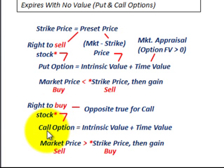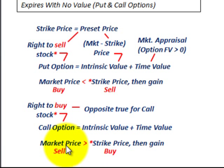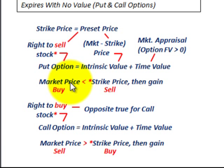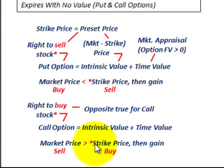The call option is the opposite of the put option — it gives you the right to buy stock. With a call option, you want to buy at a lower strike price and sell at a higher market price. We'll look at the case where you would not execute the option. For a put option, if the market price you buy at is greater than the strike price you can sell at, you wouldn't execute it. For a call option, the opposite is true: if the market price you'd sell at is less than the strike price, you wouldn't execute it.